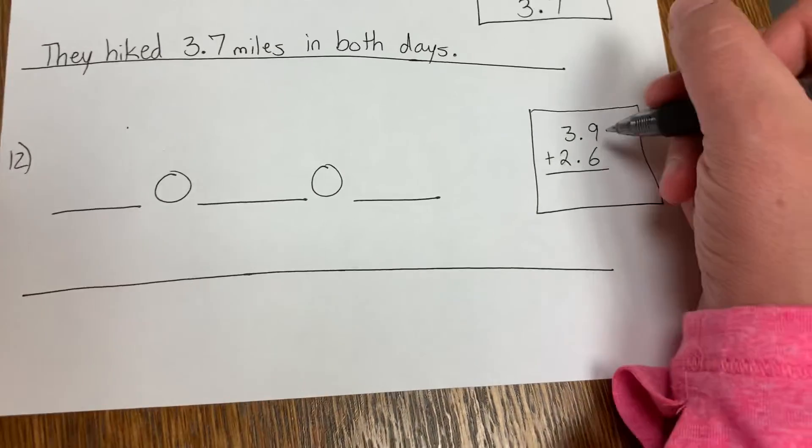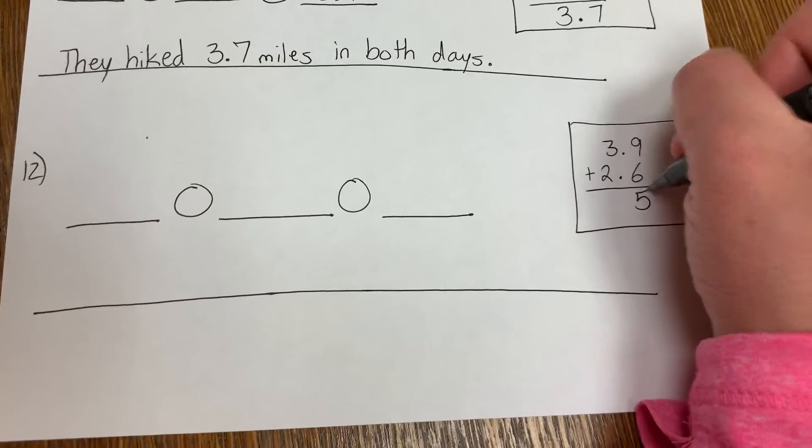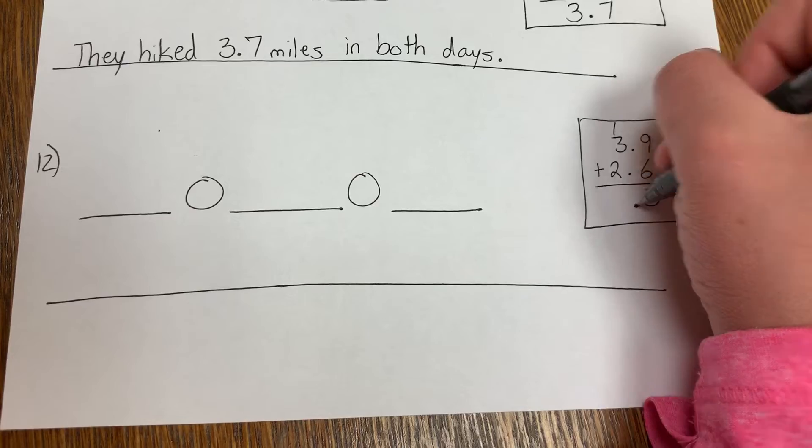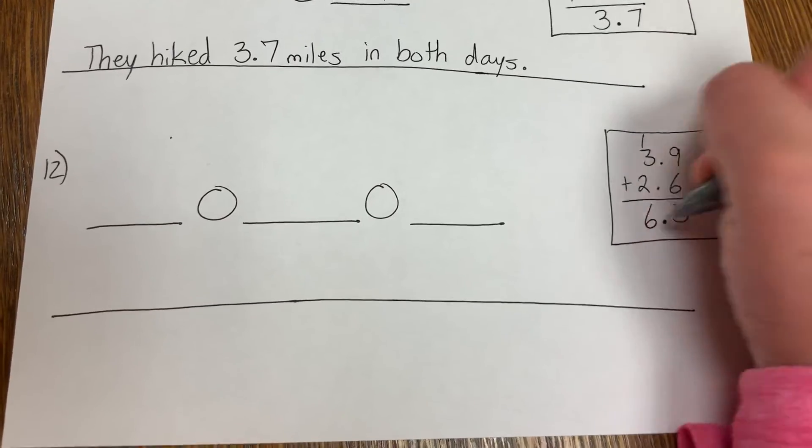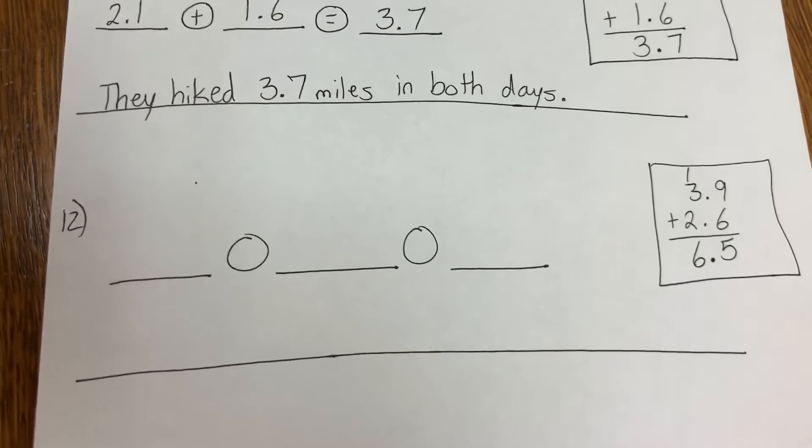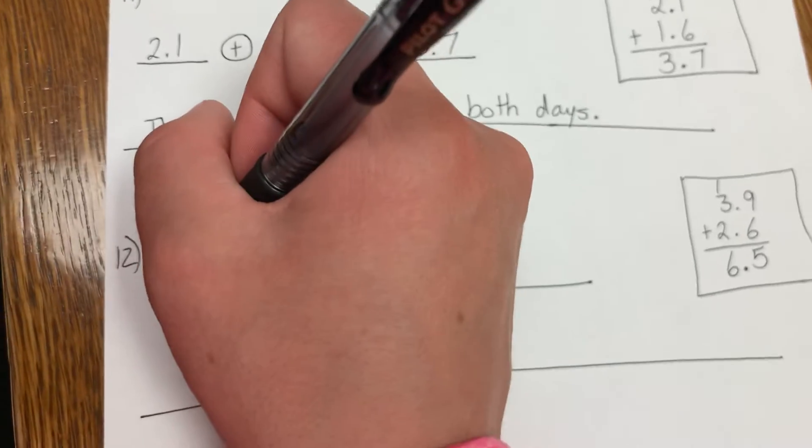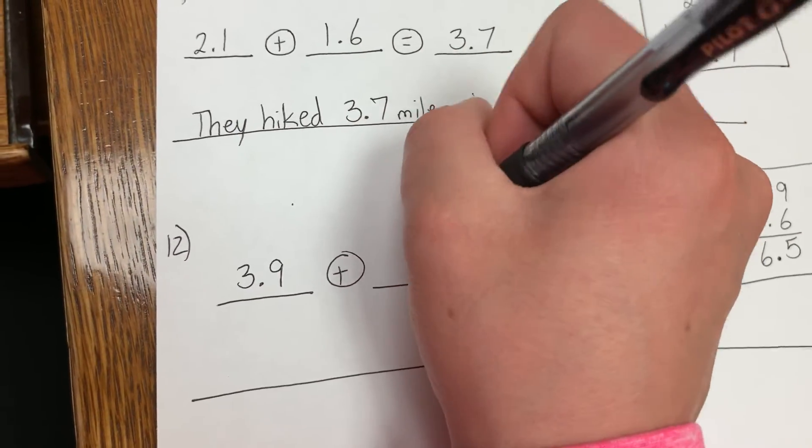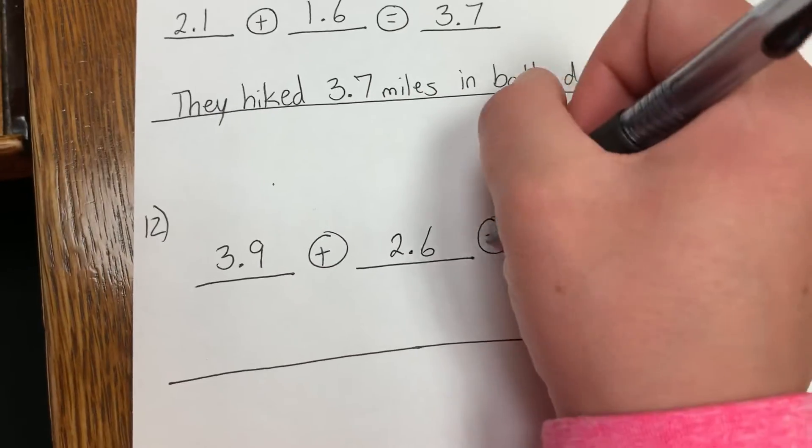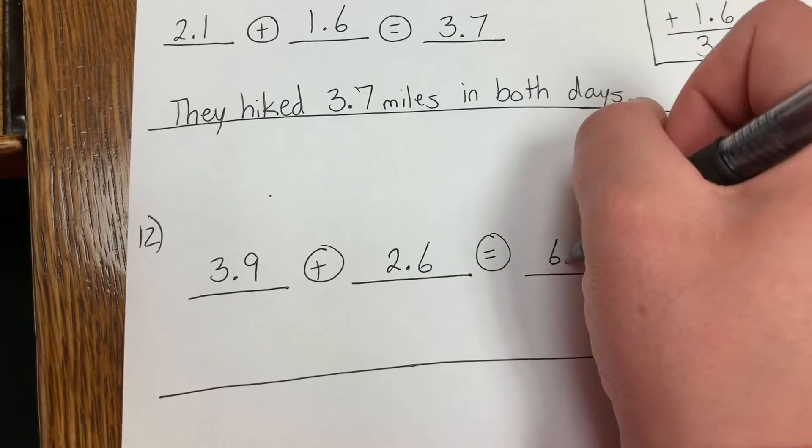Add those together. 9 plus 6 is 15. 5 down, carry the 1. Bring down your decimal. 1 plus 3 is 4, 4 plus 2 is 6. So the answer is 6.5. And then we fill in the blanks here: 3.9 plus 2.6 equals 6.5.